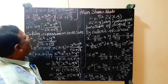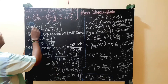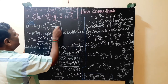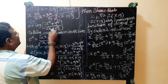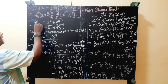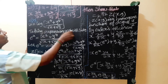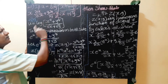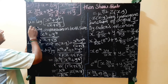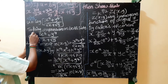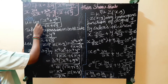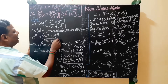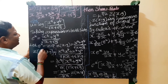If u equals log of (x power 4 plus y power 4) divided by (root x plus root y), then let z equal to e power u, so z equals (x power 4 plus y power 4) divided by (root x plus root y).